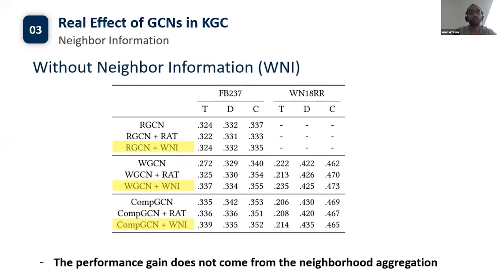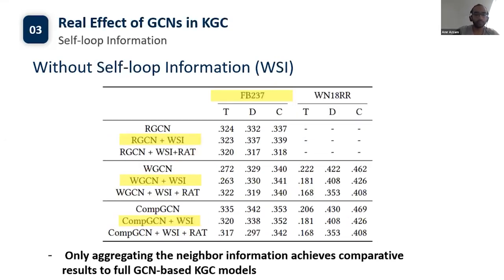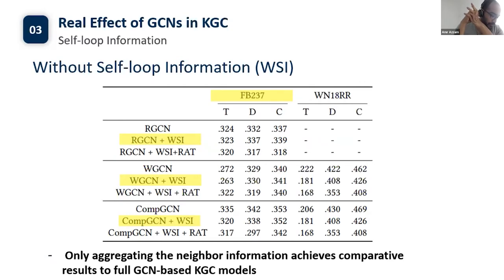To further explore the relationship between graph structure modeling and performance improvements, we conduct experiments that do not use neighbor information in the aggregation process. The results show that on both datasets, the models without neighbor information perform competitively with the original models, demonstrating that the performance gain does not come from neighborhood aggregation. To determine whether self-loop information is necessary, we conduct experiments without self-loop information — that is, the representation of an entity is generated only based on its neighborhood entities and relations. Surprisingly, leaving out self-loop information does not have a significant impact on the performance of most models.